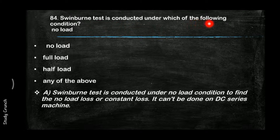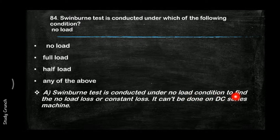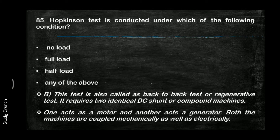Swinburne test is conducted under which condition? The answer is no-load condition. It is conducted under no-load to find the no-load loss or the constant loss. This test cannot be done on a DC series machine.